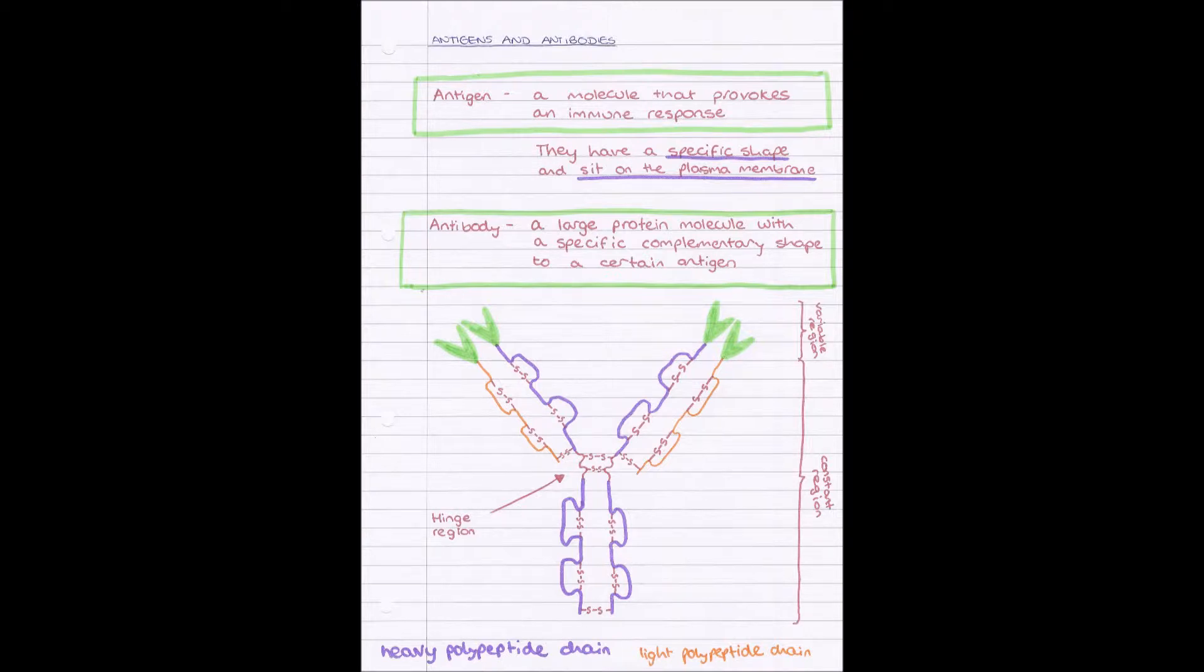An antigen is essentially the same thing, but we find it on a pathogen. So a pathogen on its cell surface membrane will have glycoproteins and glycolipids, and they will have a specific shape.